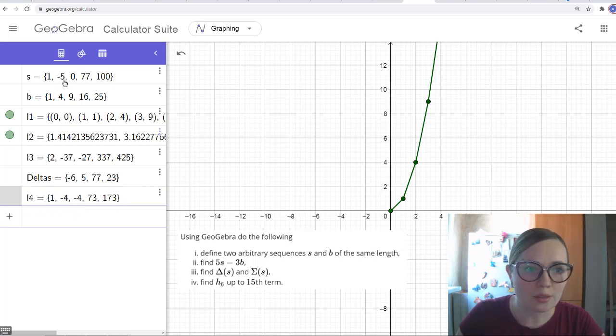So we get this sequence. Let's check. 1, 1 minus 5 is -4, plus 0 is -4, plus 77 is 73, plus 100 is 173. So everything is correct. But in summation, in the definition of summation, we get firstly 0, the first term. So we need to add 0 here.